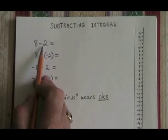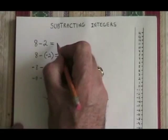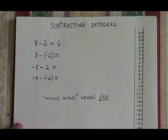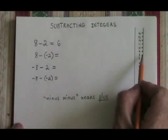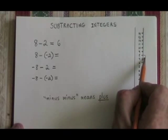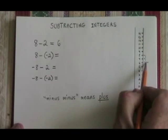Here, we have 8 and we're subtracting 2. We already know that 8 minus 2 is 6, but let's show it on the number line. Here's our starting point 8. We're subtracting 2, so we go down by 2, and we end up at 6.